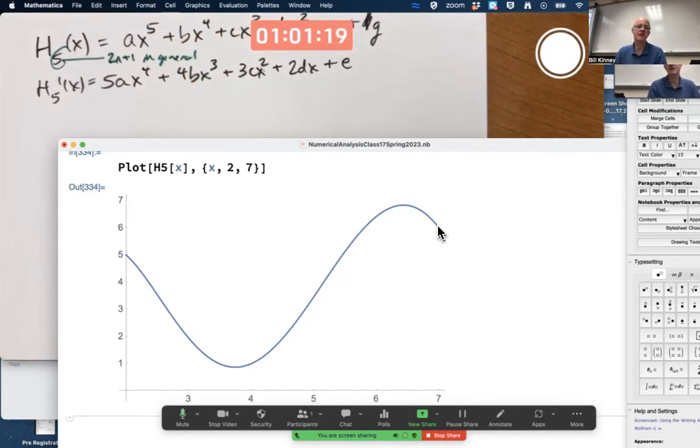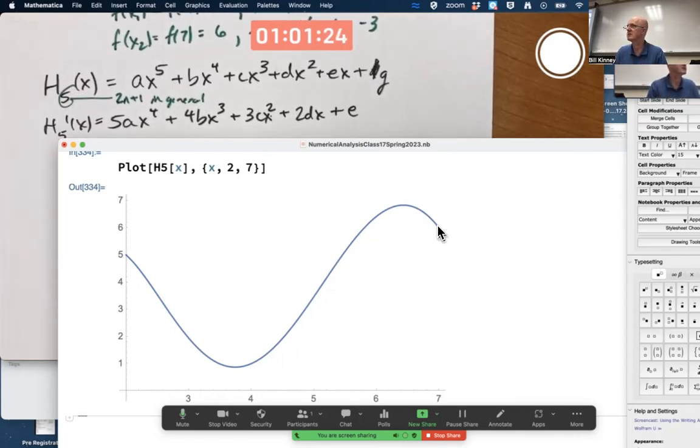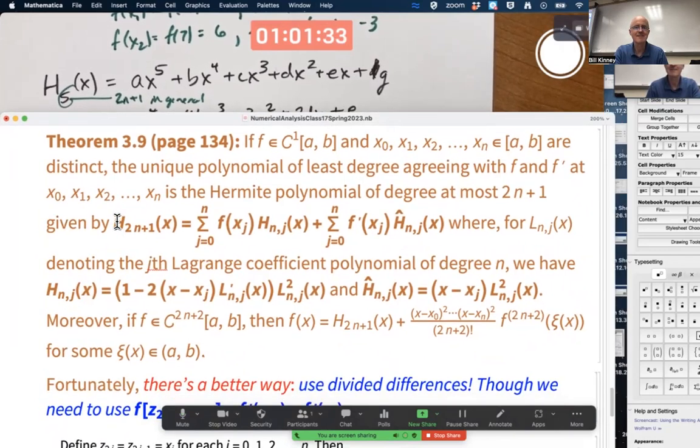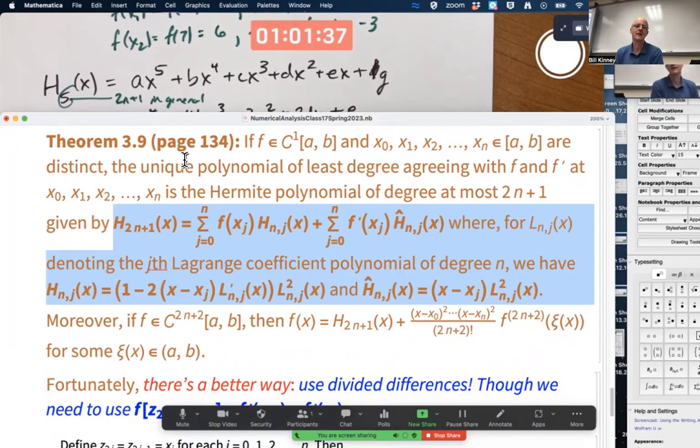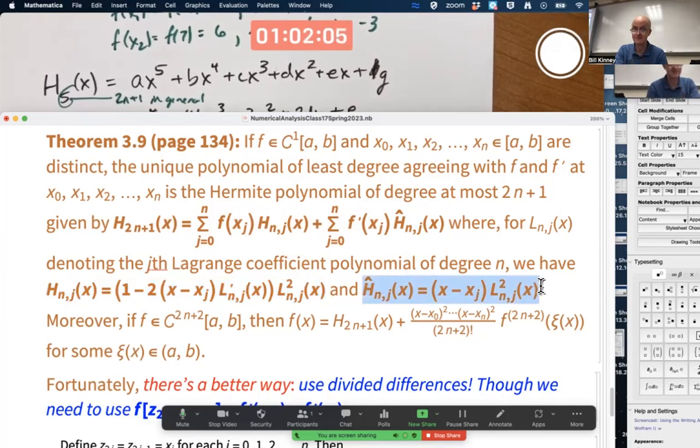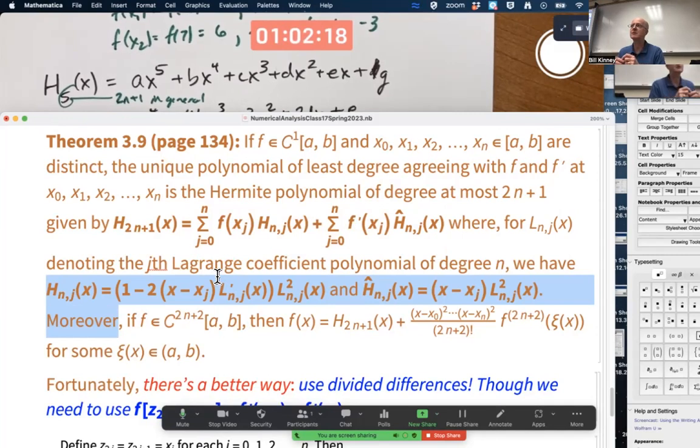And again, the book gives you a general description of how to construct this without doing all this linear algebra. Now, the linear algebra is easier conceptually because the book's description is all this stuff. You're very, very complicated. I will tell you very briefly what's going on here. You are constructing this as a linear combination of polynomials H and H hat. And H and H hat are constructed using Lagrange polynomials and they're squares in weird ways. These very mysterious ways.